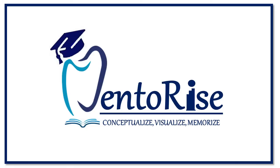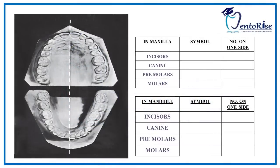We at Dentorize welcome you all to a platform where we help you to conceptualize, visualize and memorize dentistry. Be it primary dentition or permanent dentition, the denomination of each tooth is represented by the initial letter in its name. For example, incisors are represented by I, canines by C, premolars by P, and molars by M.